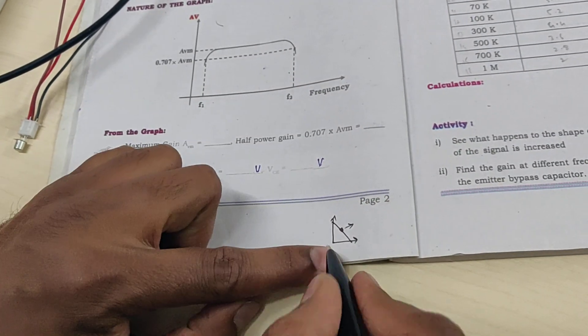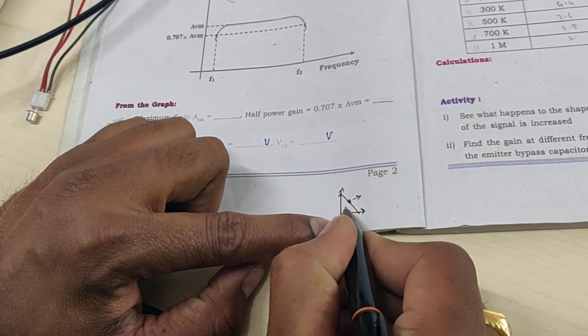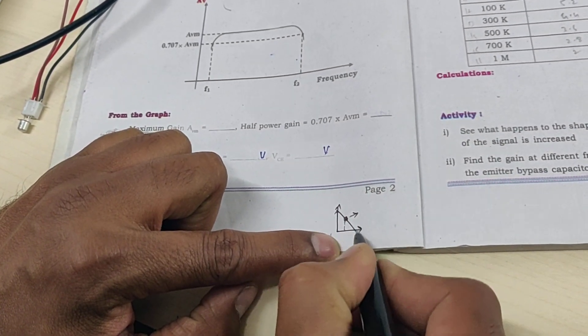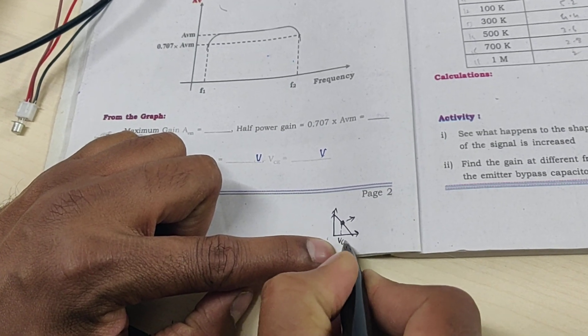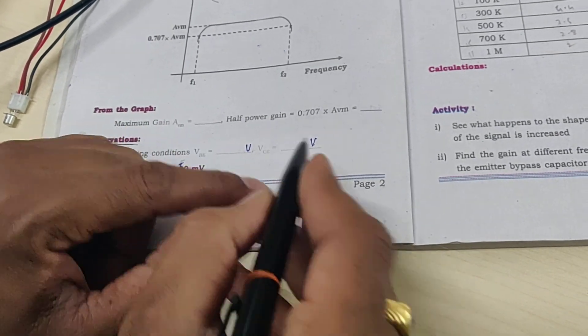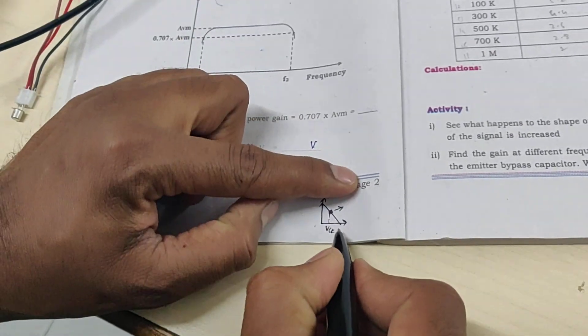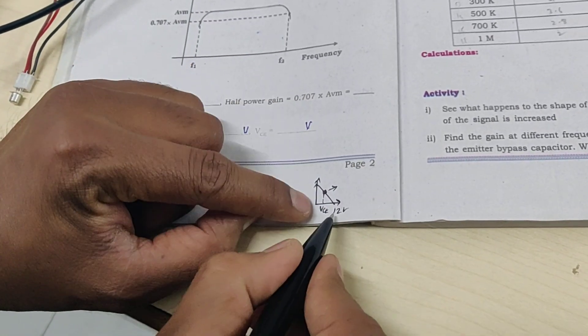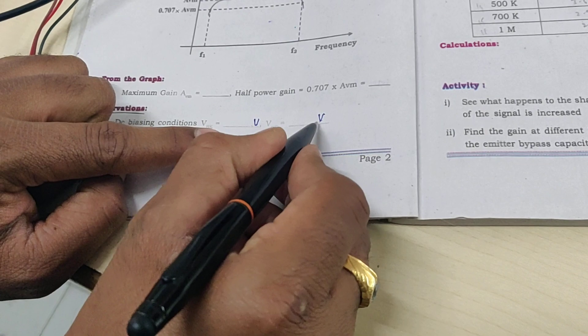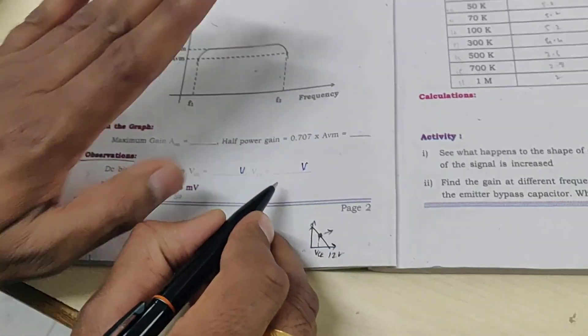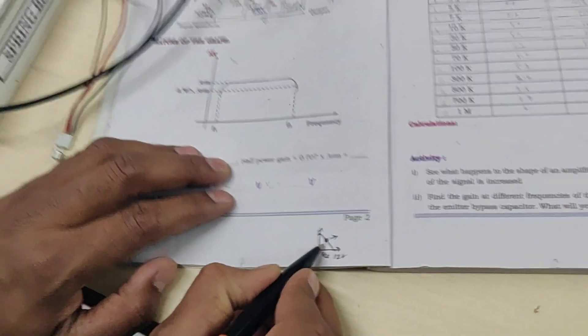Half of VCC should be VCE. The voltage applied here is 12 volts, so half of it is 6 volts. I should get nearly 6 volts here. Then we can say the operating point is in the active region.